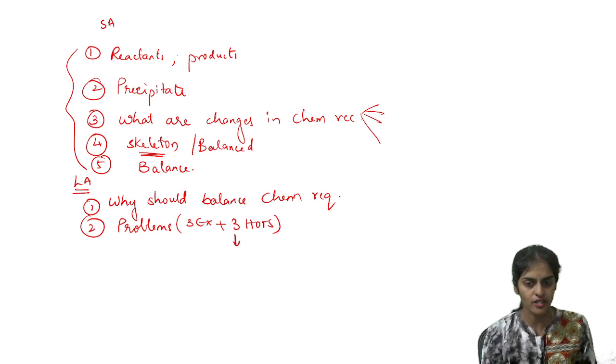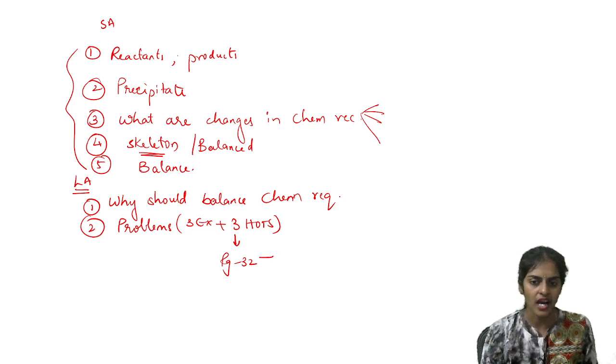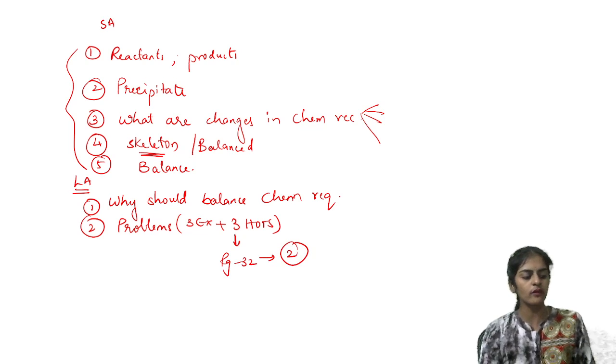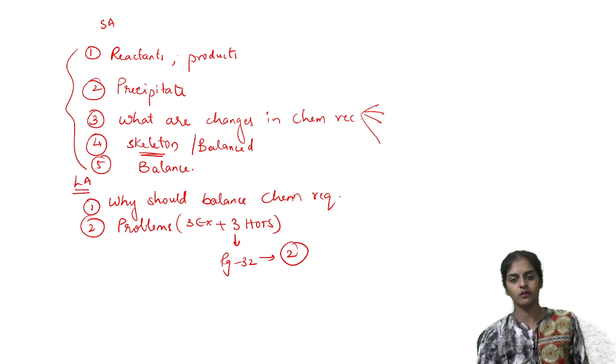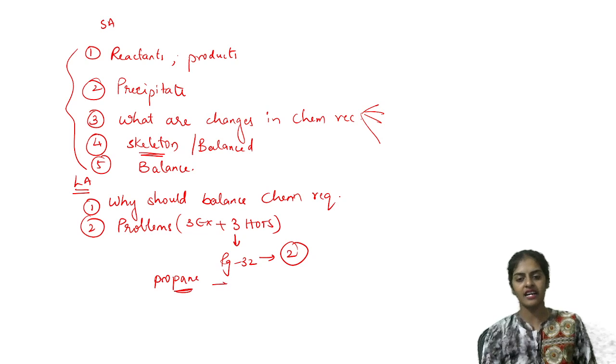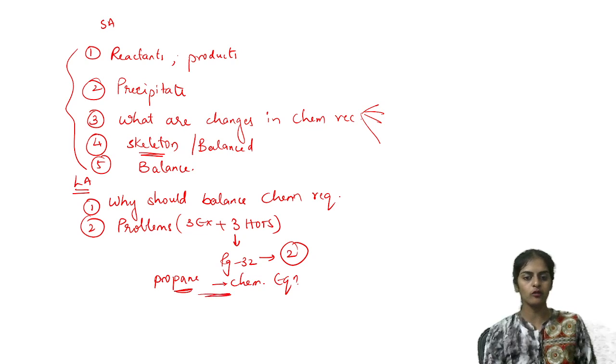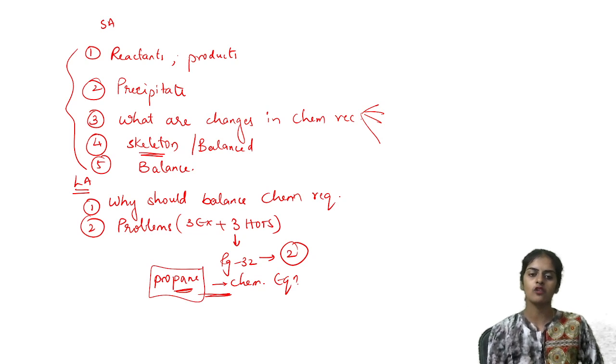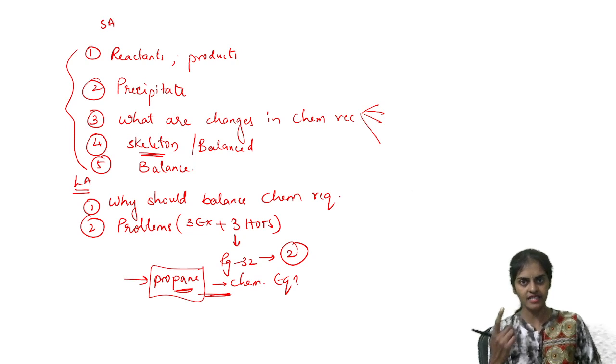Open the textbook page number 32. Second question is propane question. Propane on combustion. Similar model propane question. Propane equation is an example of balancing of chemical reaction. This equation is a balanced equation question.